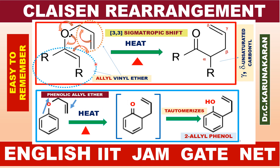Two types of compounds — allyl vinyl ether and phenolic allylic ether — undergo Claisen rearrangement reaction on heating.